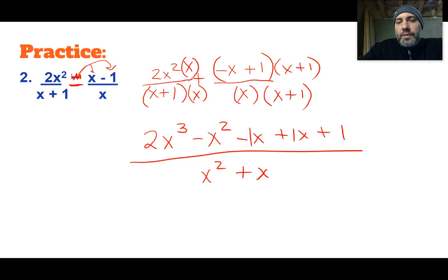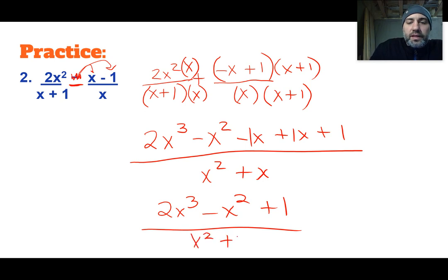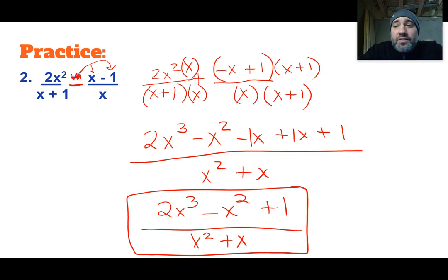Let's just simplify the numerator a little bit. So it looks like the negative 1x and the 1x would cancel off. So we would get 2x³ minus x² plus 1 all over x² plus x. And that is going to be our final answer right there. I told you these problems are a little challenging. But that's it. That's our answer right there.